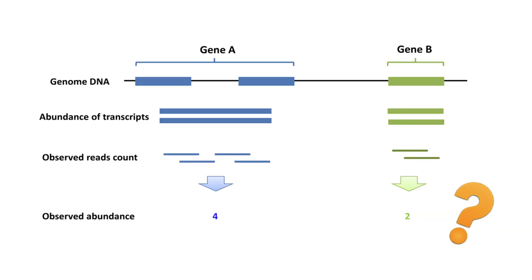For example, there are two genes, A and B. Assume that they have the same expression level. Both transcribe two transcripts each. Because A is twice as long as B, the number of reads mapped to A is twice as large as the number of reads mapped to B.